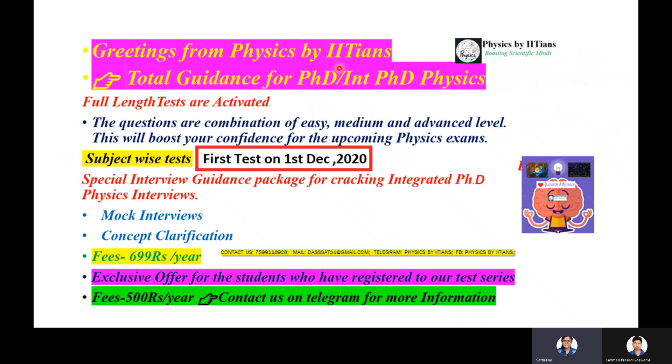You can join our test series and interview guidance with a minimum cost if you are preparing for PhD or integrated PhD physics examinations. The first full-length JAM examination will be on 1st December 2020. You can contact us on the Telegram channel Physics by H Hans, or email us directly. The cost is minimum: 699 rupees per one year. For test series candidates who have already joined, interview guidance is available at a more minimum cost of 500 rupees for one year. Contact us on Telegram for more information.